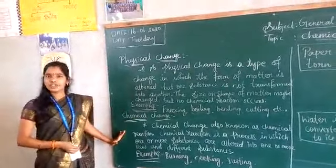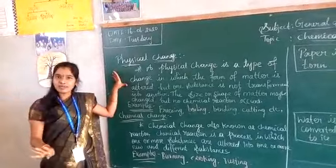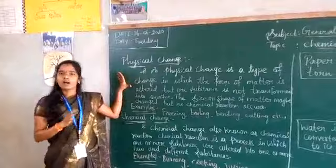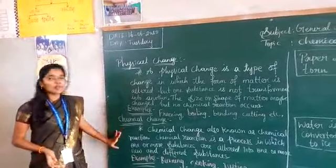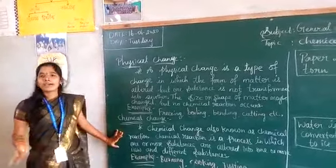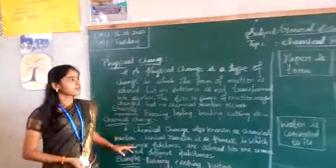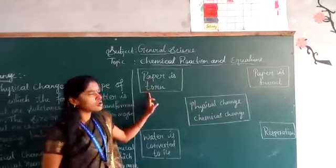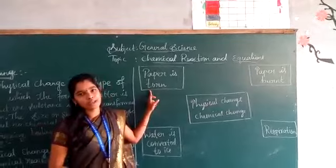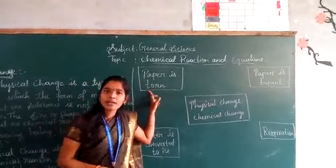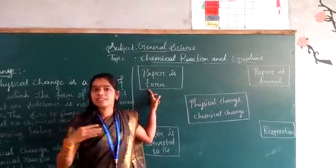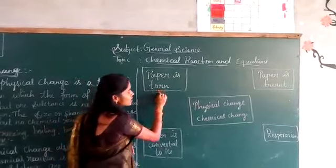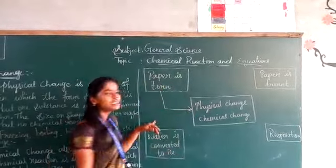In physical change, remember that only physical appearance — shape, size, and colour — changes. In chemical change, entirely new substances are formed. Now, paper is torn: if you tear the paper it is still paper and doesn't change into any new substance, so tearing paper is an example of physical change.